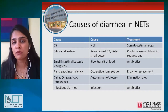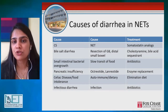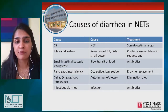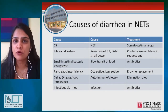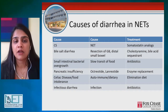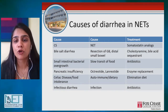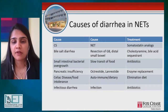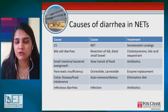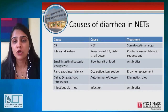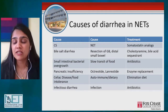Carcinoid syndrome is the most common cause of diarrhea in these patients, but there are others. Bile salt diarrhea is related to removal of the gallbladder and surgery on the intestines, and there are treatments for that. Small intestinal bacterial overgrowth is related to slow transit of food from adhesions or scar tissue in patients who've had surgery, and can be treated with antibiotics. Patients treated with octreotide or lanreotide can develop deficiency of pancreatic digestive juices, causing diarrhea. You can still have celiac disease or food intolerance despite a NET diagnosis, and infectious diarrhea can also occur. All of these need to be ruled out with thorough GI evaluation.